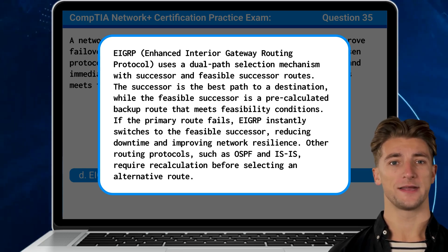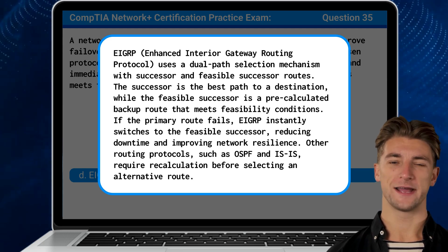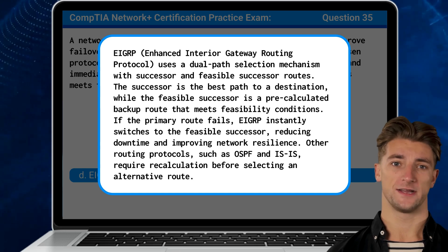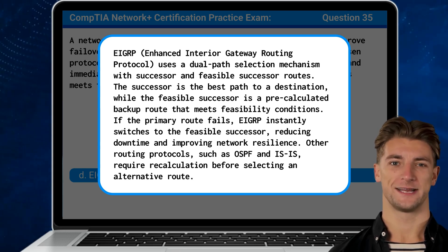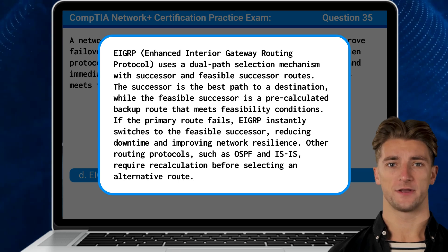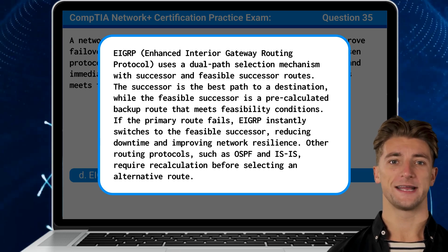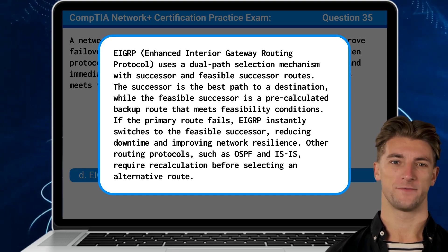The successor is the best path to a destination, while the feasible successor is a pre-calculated backup route that meets feasibility conditions. If the primary route fails, EIGRP instantly switches to the feasible successor, reducing downtime and improving network resilience. Other routing protocols, such as OSPF and IS-IS, require recalculation before selecting an alternative route.